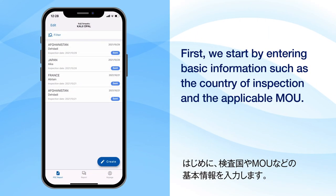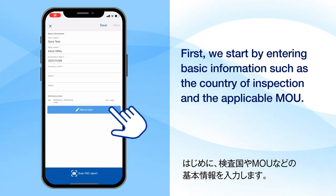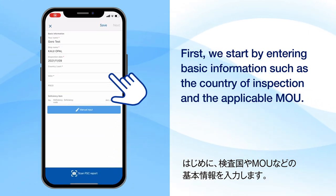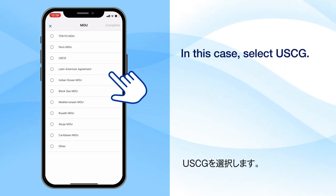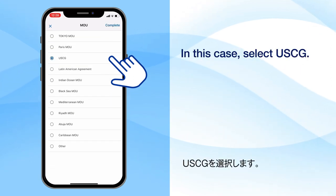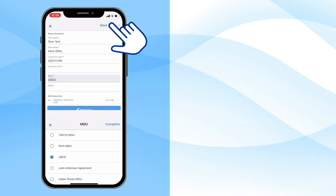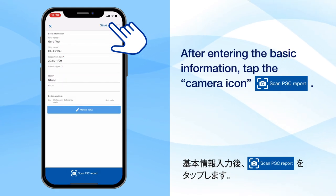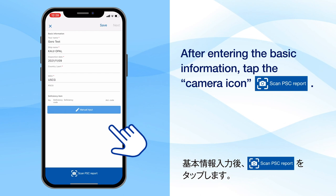First, we start by entering basic information such as the country of inspection and the applicable MOU. In this case, select USCG. After entering the basic information, tap the camera icon.